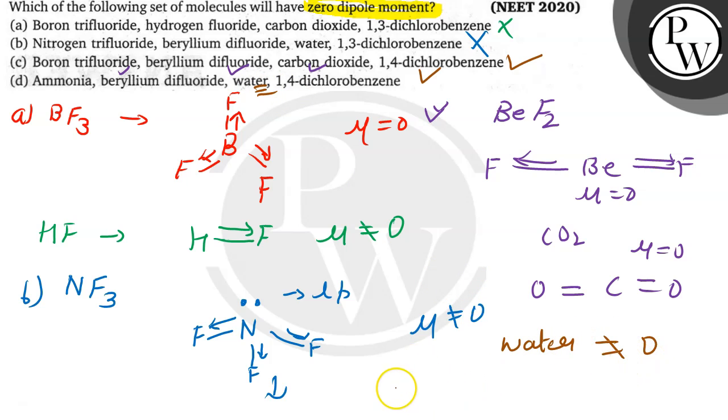If I draw its structure, that is H2O, so O-H, H, and here lone pair. This will have net dipole moment in this one direction, means it will not have the dipole moment zero. So this cannot be our answer. The correct option will be option C. Thank you.